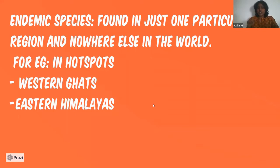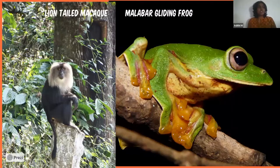To give an example of endemic species: in the Western Ghats we have a very interesting monkey called the lion-tailed macaque. You can see its peculiar lion-like mane and short tail in the photo. They are exclusive rainforest dwellers with very specific feeding habits, and are endemic to the Western Ghats.